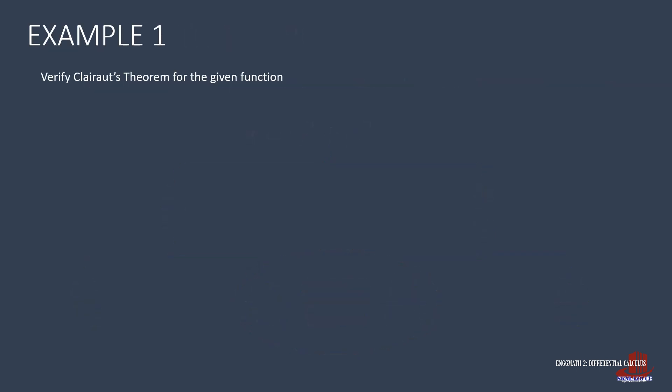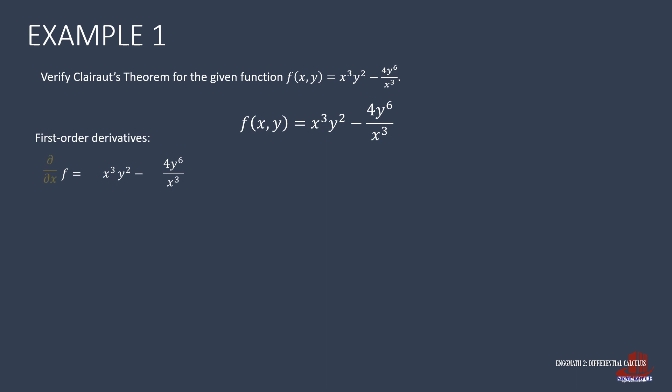Let's verify Clairaut's theorem with the function x cubed y squared minus 4y raised to 6, all over x cubed. We start by taking the first derivatives, and since we do have x and y, we expect two partial derivatives — one with respect to x and another with respect to y. For the partial derivative with respect to x, we get y squared multiplied by the partial derivative of x cubed, minus 4y raised to 6 times the derivative of x raised to negative 3.